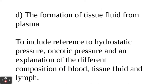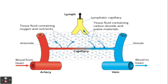Welcome biologists to this session where we're going to look at the formation of tissue fluid. Tissue fluid forms in the capillary area of our tissues. Because we have a closed circulatory system, the blood cannot leave our capillaries. So in order for substances containing oxygen and nutrients to reach our cells, they have to leave our blood through tissue fluid, and we're going to look at how that is formed.